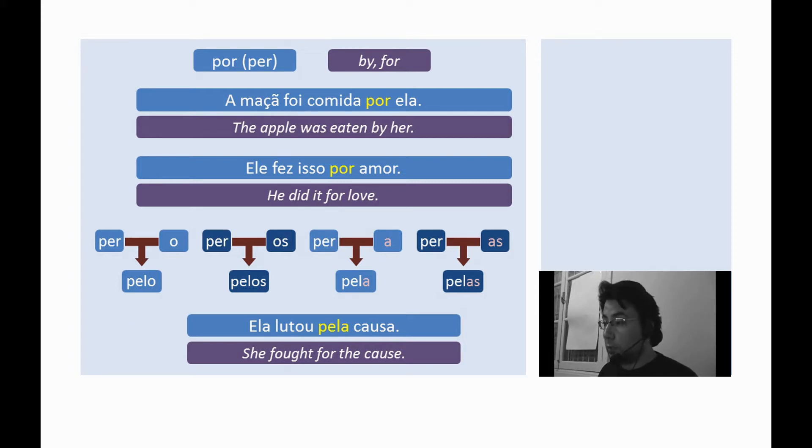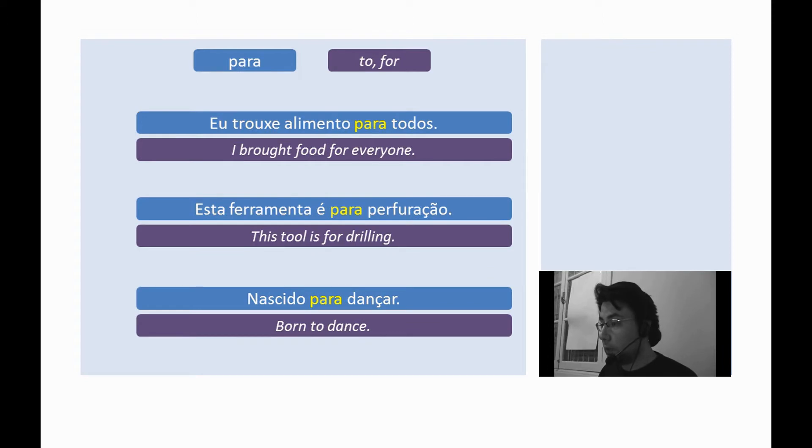Now, the preposition para. Para. Usually translated as to or for, depending on the context. Examples. Eu trouxe alimento para todos. I brought food for everyone. Esta ferramenta é para perfuração. This tool is for drilling. Nascido para dançar. Born to dance.